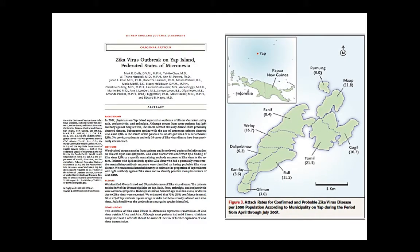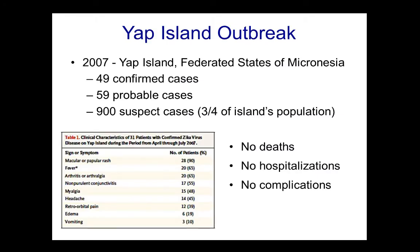Zika really hit prime time in this paper in the New England Journal of Medicine published in 2007 — a Zika virus outbreak on Yap Island in the Federated States of Micronesia, several hundred kilometers north of New Guinea. This infection involved up to three-fourths of the population. There were 49 confirmed cases, 59 probable cases, and almost a thousand suspect cases. No deaths, no hospitalizations, and no complications. Signs and symptoms included rash, fever, arthralgia, conjunctivitis, headache, retroorbital pain, and edema.